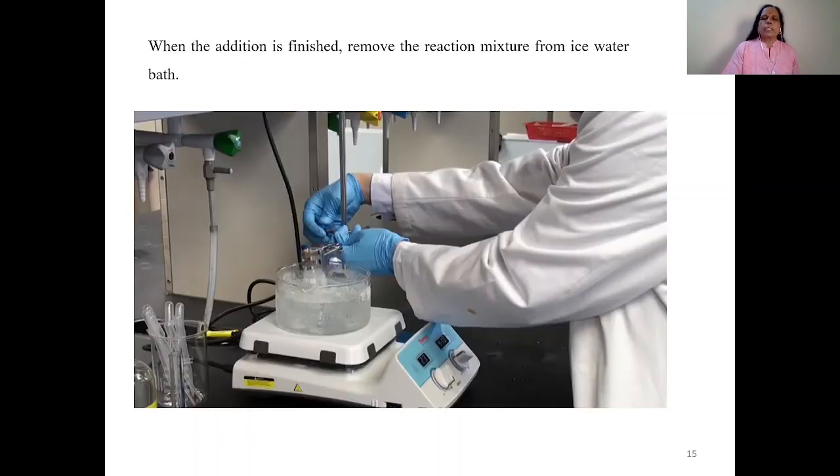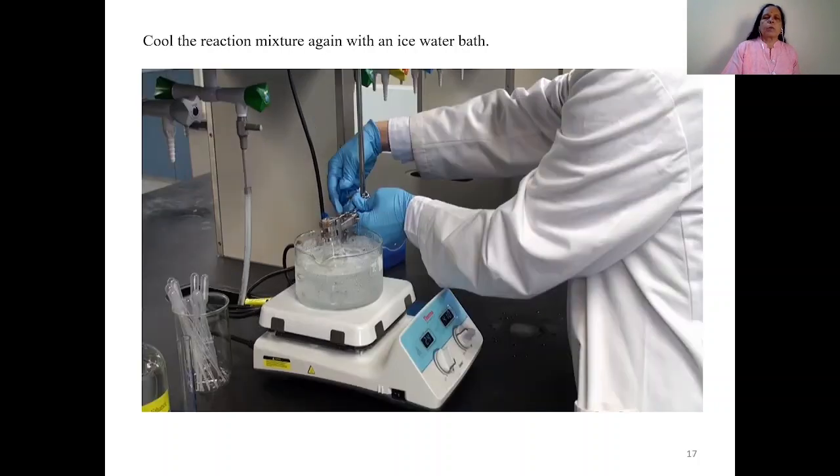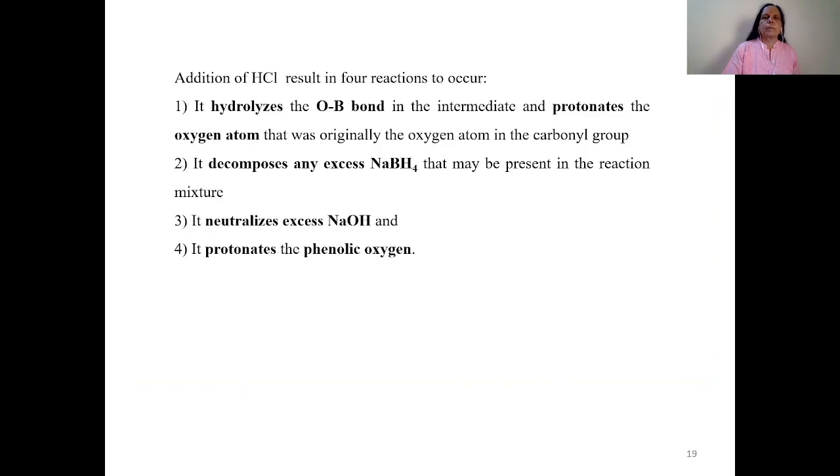When addition is complete, remove flask from ice bath. And for completion of reaction, allow this reaction to stir at room temperature for 5 minutes. Cool this reaction mixture again in water bath. And to that solution add 6 molar HCl dropwise with stirring until hydrogen gas is no more evolved. So you have to add 6 molar HCl till there is no evolution of hydrogen gas.